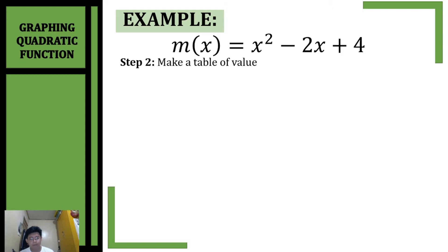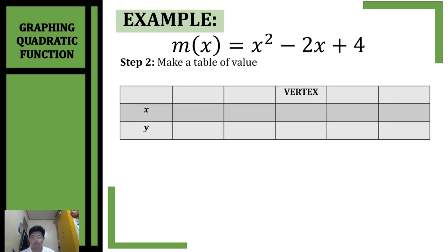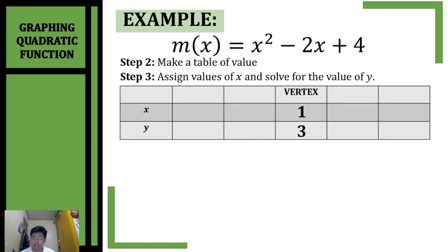Now that we have our vertex, it's time to proceed to the next step. The second step is to make a table of values. For our table of values, let's place our vertex in the middle — we have (1, 3) as our vertex. Third step: assign the values of x and solve for the value of y. I prefer you to use numbers that are closer to the x-coordinate of our vertex.